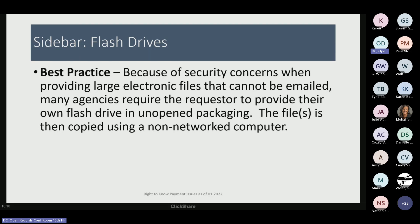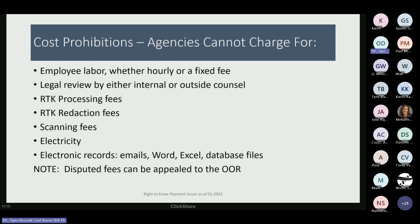Let's talk about what you cannot charge for under the right-to-know law. First is employee labor, whether an hourly fee or a fixed fee. We occasionally find agency websites charging $10 an hour or a flat $25 fee for all right-to-know responses. That is inconsistent with the law. The right-to-know law is clear — you cannot charge for employee labor. It's simply considered the cost of the government doing business. You also cannot charge for any legal review, whether in-house counsel or an outside solicitor.